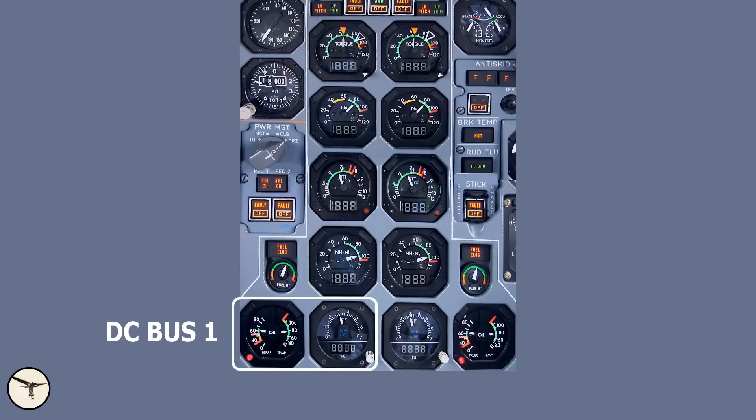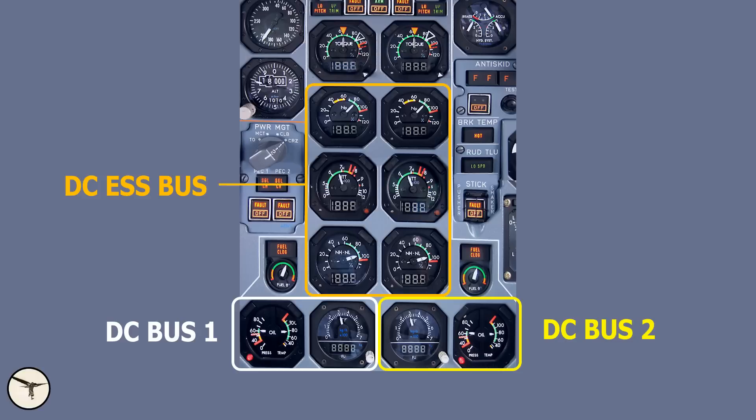When it comes to ATR variants with EFIS cockpit, we have a nice rule of thumb to identify failed buses. DC bus 1: You have lost engine 1 oil and fuel indication. DC bus 2: You have lost engine 2 oil and fuel indication. DC essential bus: You have lost NP, ITT and NH, NL indication. And DC emergency bus: You have lost torque indication. That's really easy.